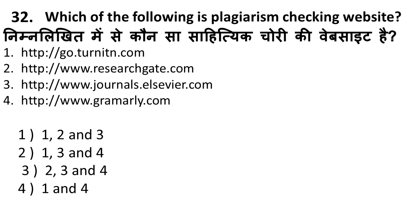Next question: which of the following are plagiarism checking websites? Turnitin is a plagiarism checking website. Grammarly is a grammar checking website but also does plagiarism checks. ResearchGate is for researchers' profiles, rankings, and citations. Elsevier is a journal website. So the correct answers are Turnitin and Grammarly — options 1 and 4. Remember: Turnitin and Grammarly are the plagiarism checking tools.